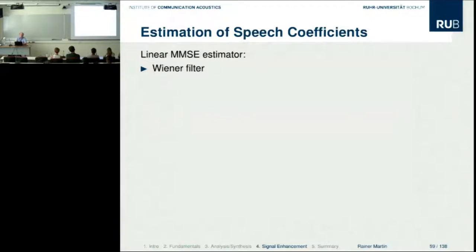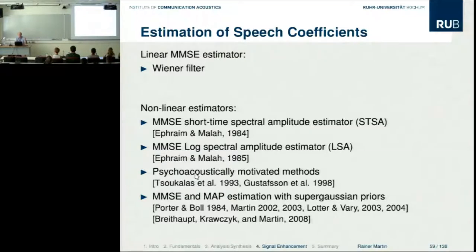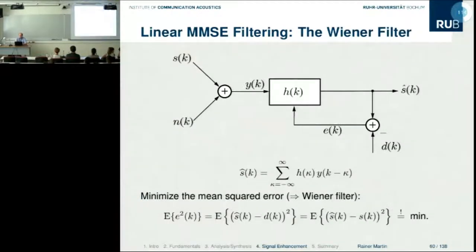There are many methods for computing this weighting. The most well-known is the Wiener filter, which is the linear estimator. There are also many popular non-linear estimators — for example, estimators that focus on the spectral amplitude instead of complex Fourier coefficients, log spectral amplitude estimators, and psychoacoustically motivated models that consider simultaneous masking in the ear. I will introduce a few of these.